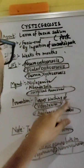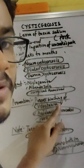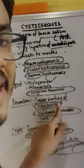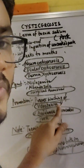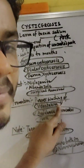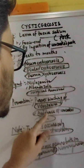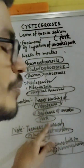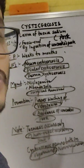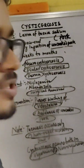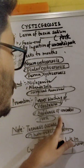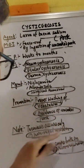Prevention includes proper washing of vegetables. Before having raw vegetables such as varieties and carrot, wash the vegetables properly before consuming them. Also, avoidance of uncooked pork is important, as uncooked pork will lead to cysticercosis and must be avoided.